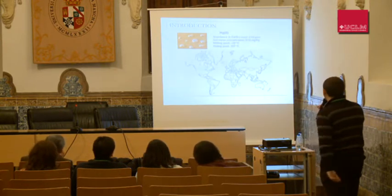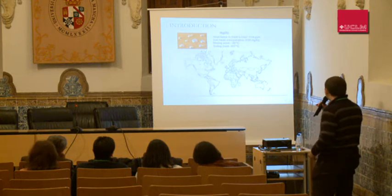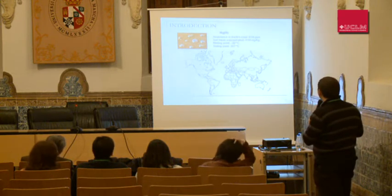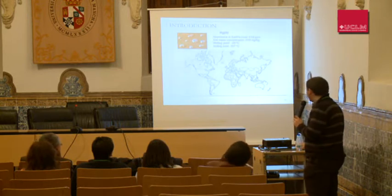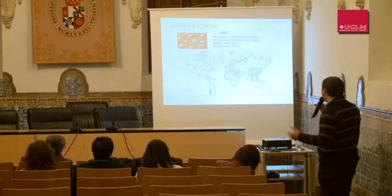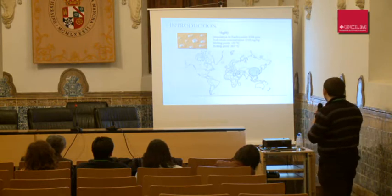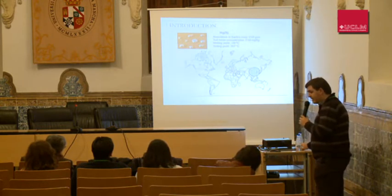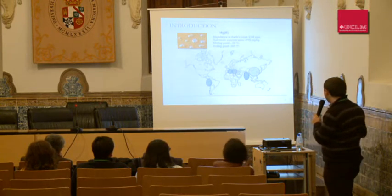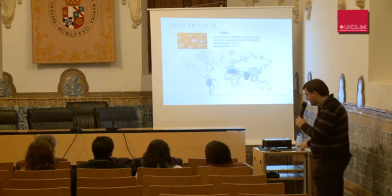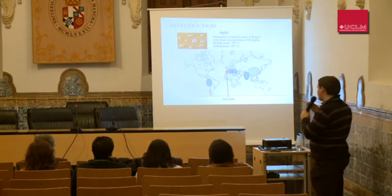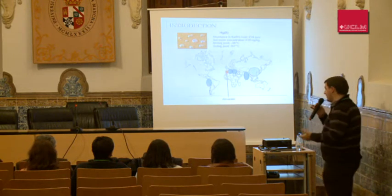The other important ion in this work is mercury. Mercury has been used since ancient times in countries like China or Egypt. Its use was extended to civilizations like India, Greece, Rome, and the Incas. But the main production site is the city of Almadén.